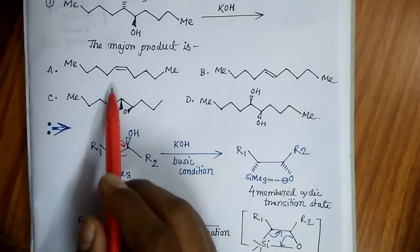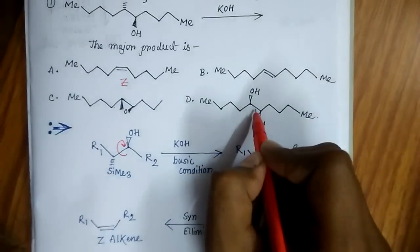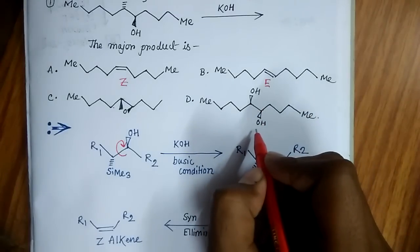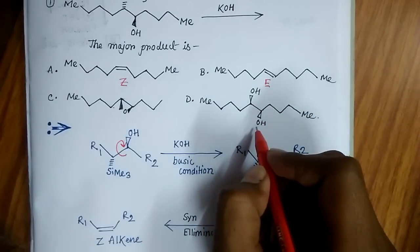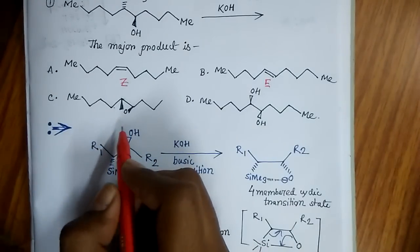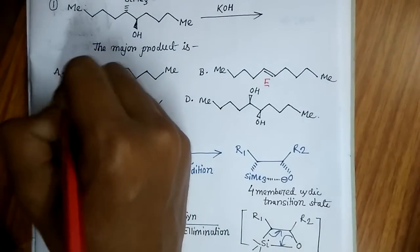Four options are given: A is the Z alkene and B is the E alkene. E alkene is not forming here. In C, dihydroxylation is taking place with two OH groups, but it is not possible in this reaction. In D, epoxidation is taking place. So the right answer is A.